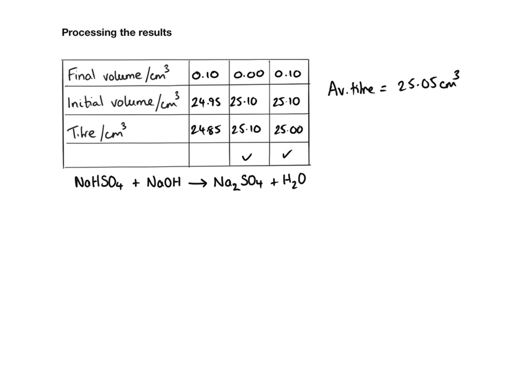The concentration of sodium hydrogen sulphate we worked out in the first video and it was 0.1 mole per decimetre cubed. We know the volume of sodium hydrogen sulphate we've used because that was the average titre. So we know that the volume is 25.05.